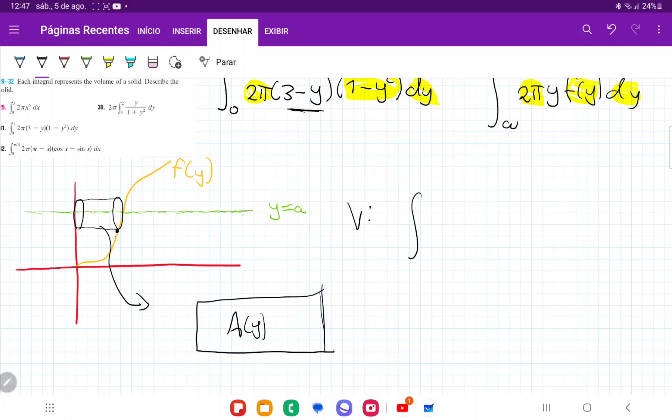So our volume is going to be the sum from a to b of A(y) dy. So we just have to think about how we're going to sum up all these areas to get a volume. And what's missing is we need to be able to describe this area here as a function of y.